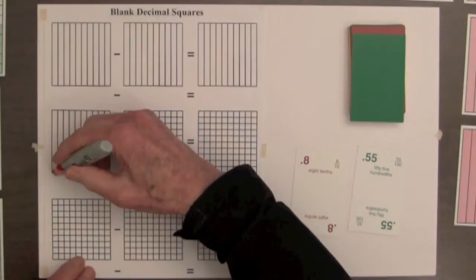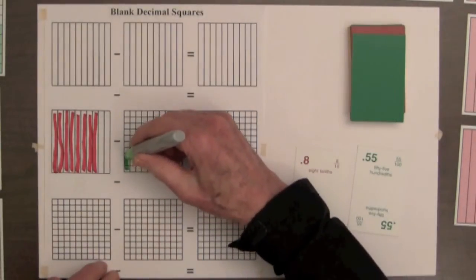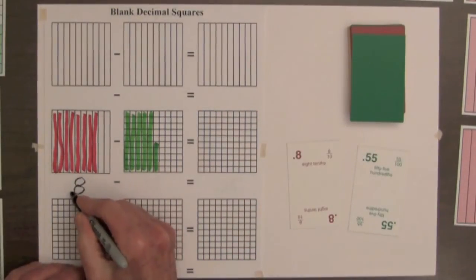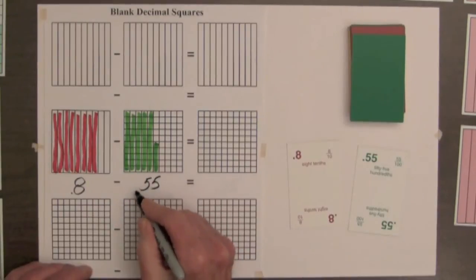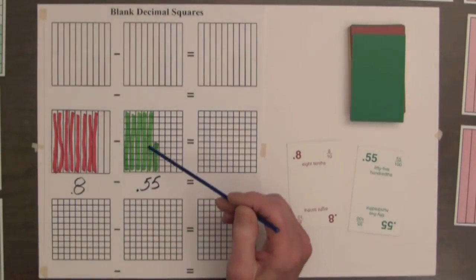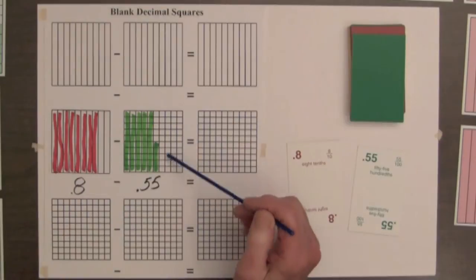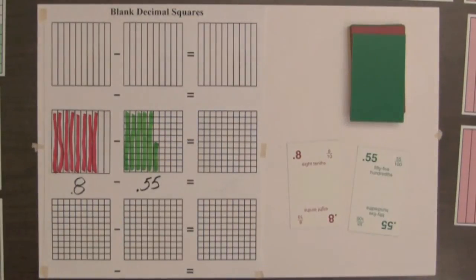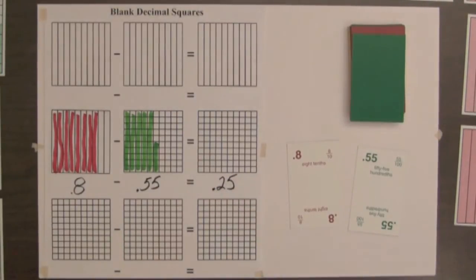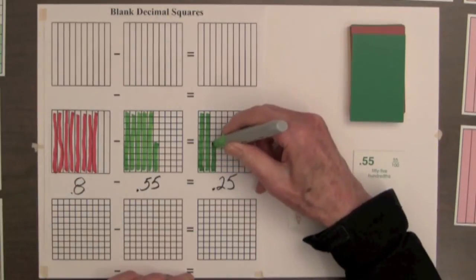Let's shade the squares — eight tenths and fifty-five hundredths. Eight tenths minus fifty-five hundredths: comparing the squares, we have eight full columns for eight tenths, and five for fifty-five hundredths. We need five more hundredths to fill out the column, and then two more full columns — that's ten, twenty, twenty-five. The difference in the shaded amounts is twenty-five hundredths.